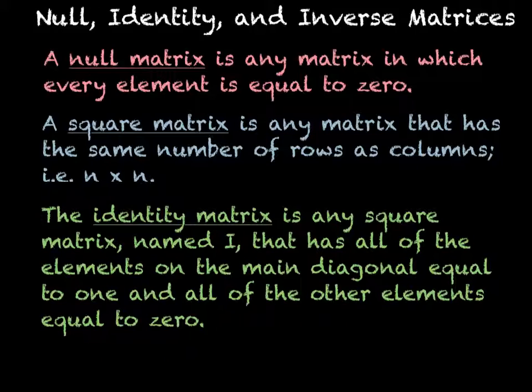A square matrix is any matrix that has the same number of rows as columns. That would be any n by n matrix, 2 by 2, 3 by 3, 4 by 4.